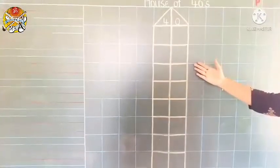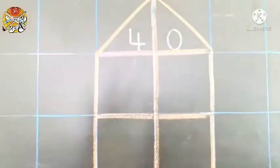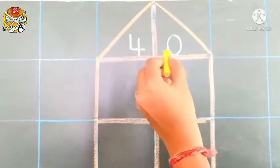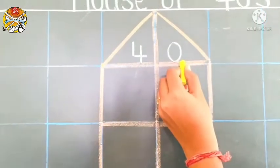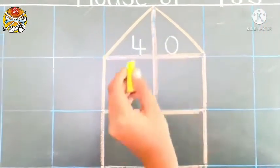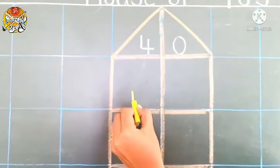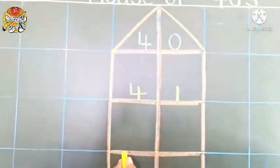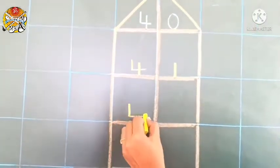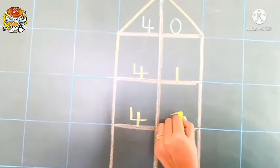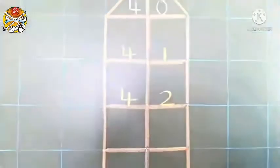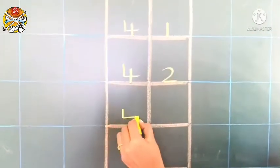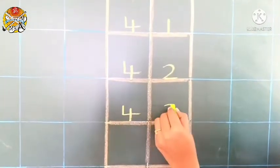See this is house of 40. Which numeral is this? Yes, 40. What comes after 40? Yes, 41. Then 42, 43.